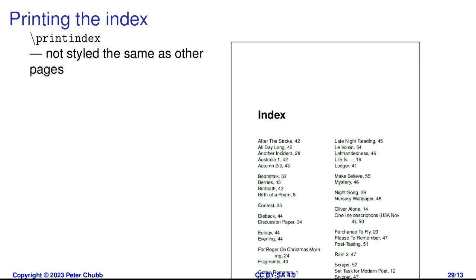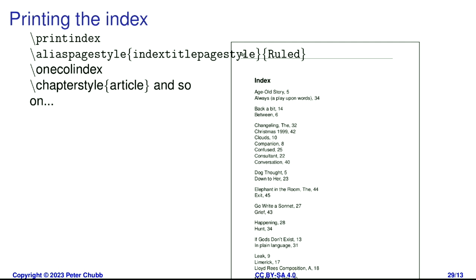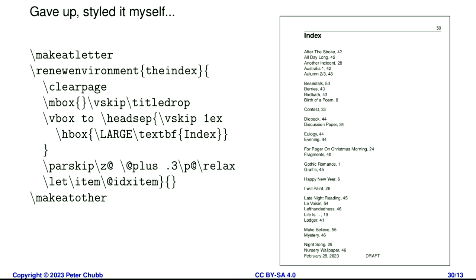When we come to print the index, if I just use print index, I get something that looks nothing like the other pages of the book. I can change the page style to ruled like all the other ones and get the line and the page number, but it still doesn't look right. After trying various things to style it, I got fed up and just wrote my own index style. At that point I get exactly what I want — we want to move the index word right up to the top and have a skip before the content, essentially the same as what we did for the poem environment.